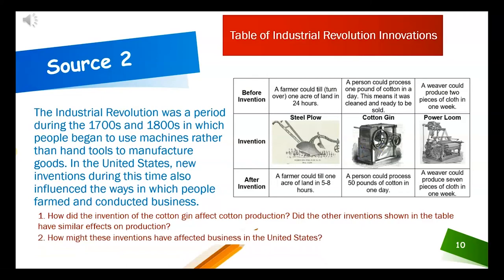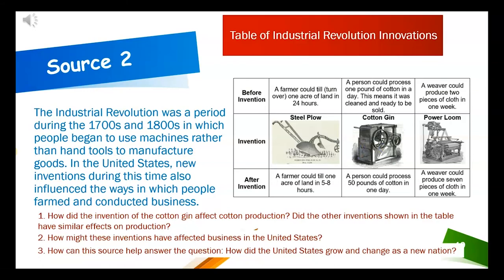Our second question: how might these inventions have affected business in the United States? I would think that they could definitely have more business, because they could do things a lot faster. People wouldn't have to wait as long, so more people could have access to it. And the price of it would probably be cheaper, because it's not as hard to make anymore. Our third question: how can this source help answer the question, how did the United States grow and change as a new nation? I think this shows us that they could provide more things to the people that lived here, and they could provide more things to more people, which meant more people could live here.